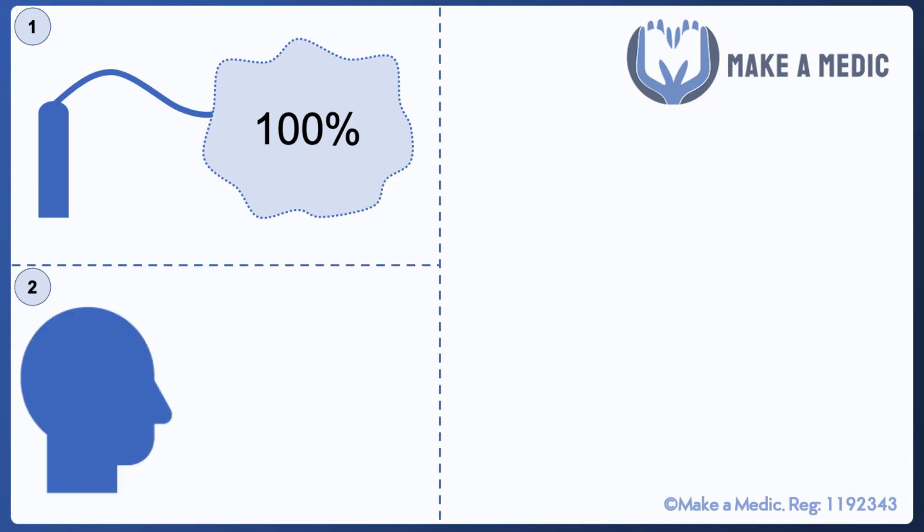The second concept is something called peak inspiratory flow rate. This is a measure of the flow rate of air that is passing into your airways during inspiration, and for most people at rest it will be around 20 to 30 liters per minute.